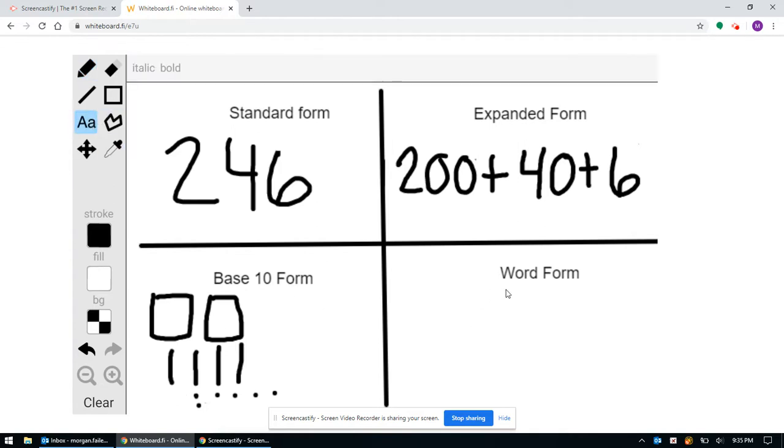Now for word form, it's just like it sounds. You're just going to write out this number using words. So we're going to spell out 246, and this is the word form for this number.